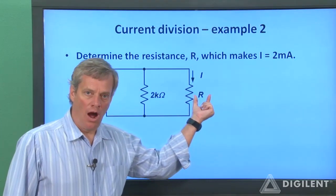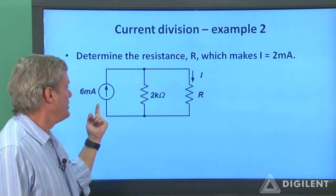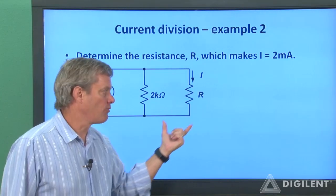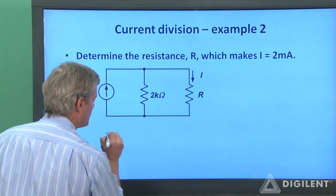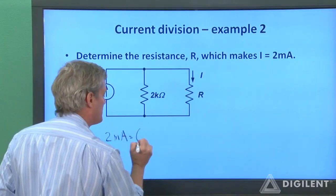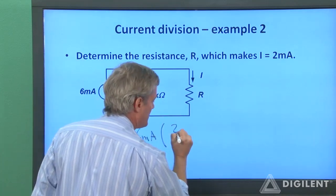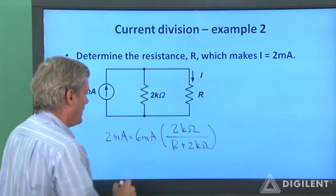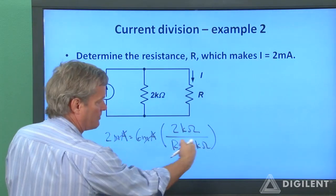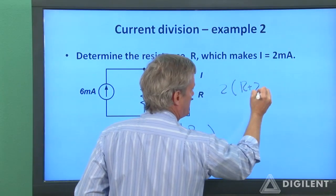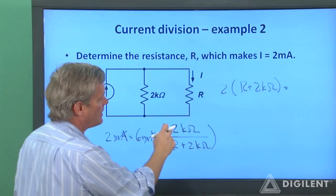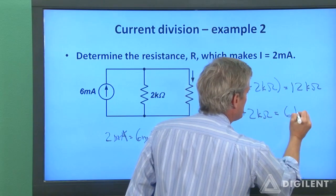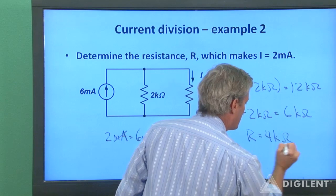In this example, we want to find the resistance R that makes the current through one resistor equal to 2 milliamps. We know the total current into a pair of parallel resistors, so we use the simple two-resistor current divider formula. Setting I = 2 mA = 6 mA × (2 kΩ)/(R + 2 kΩ), we cancel the milliamps and multiply through by the denominator: 2(R + 2 kΩ) = 12 kΩ. Dividing by 2 gives R + 2 kΩ = 6 kΩ, so R = 4 kΩ.